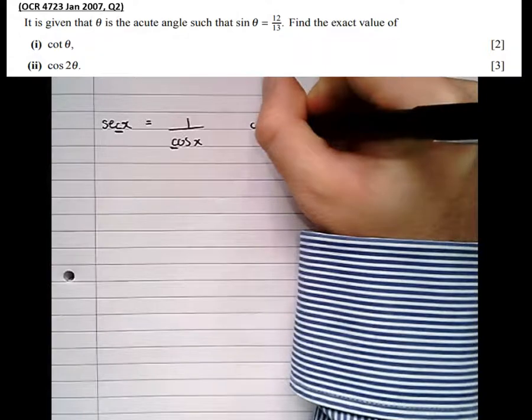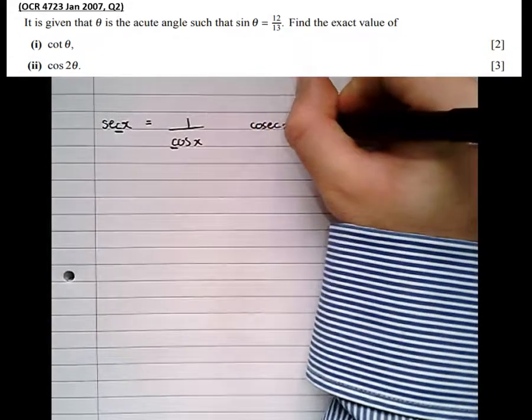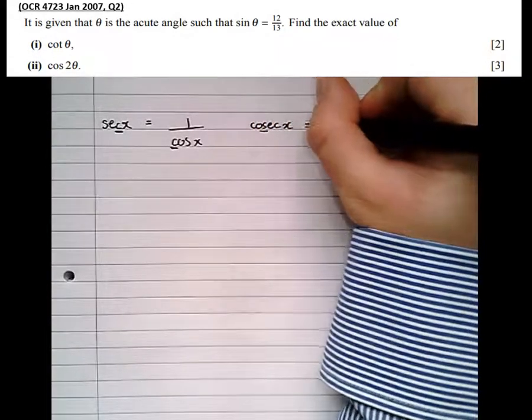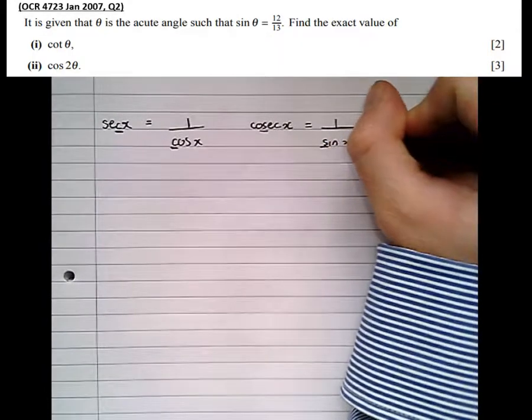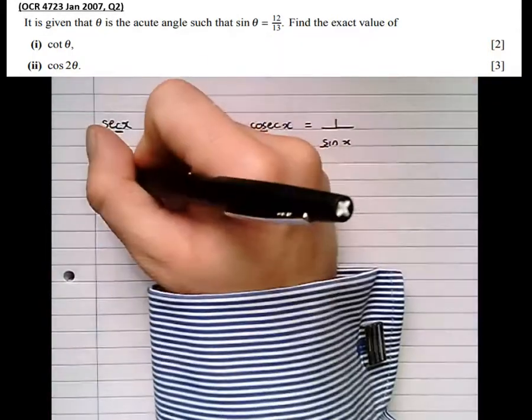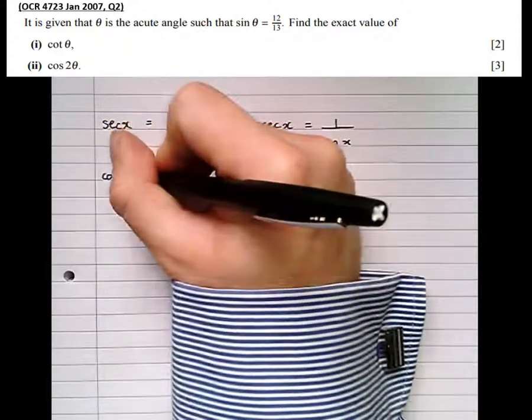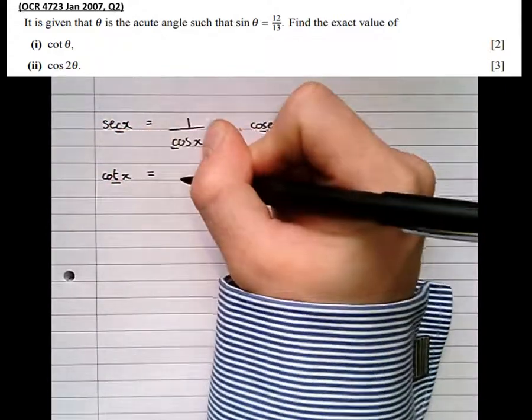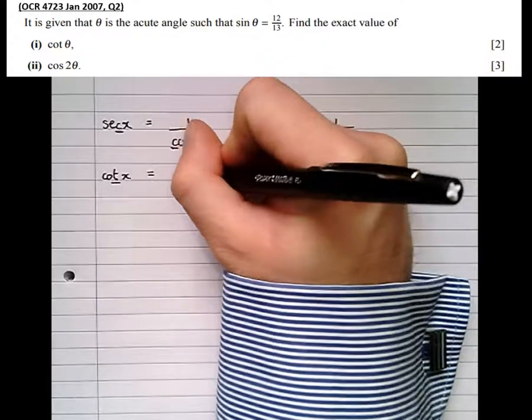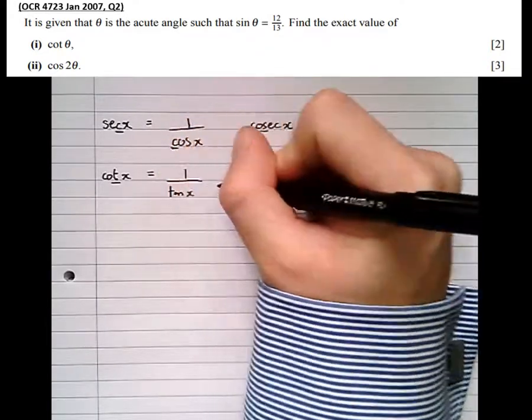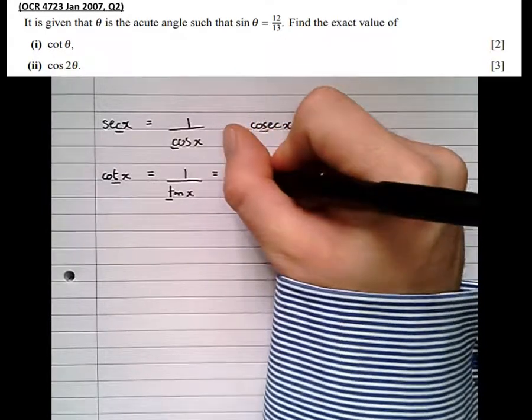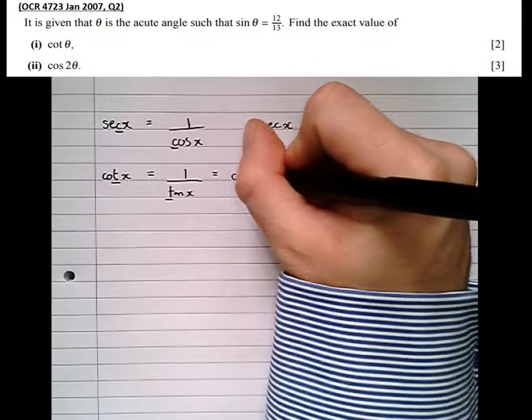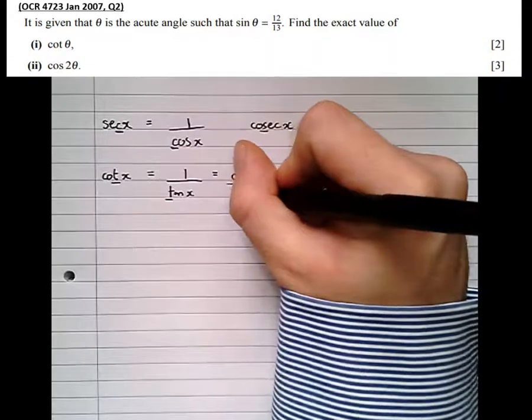So applying this to cosec x, where the third letter is s, that must relate to 1 over sine x. And cot, where the third letter is t, relates to 1 over tan x. And since tan is sine over cos, the reciprocal of sine over cos is cos x over sine x.